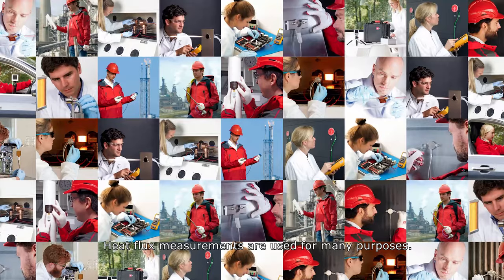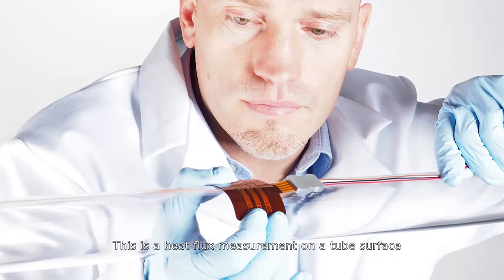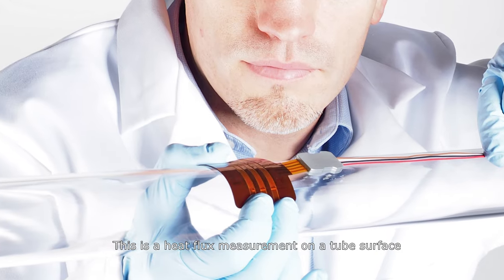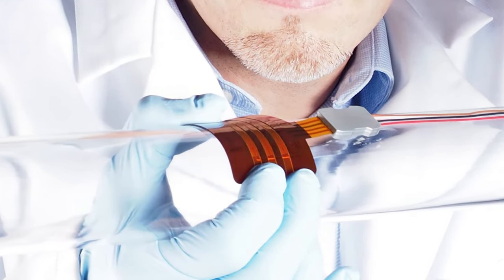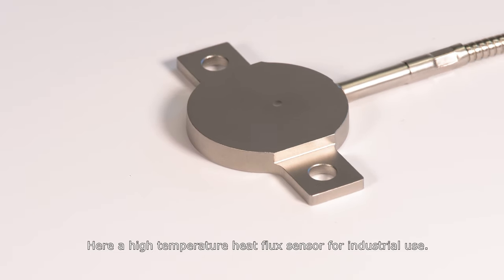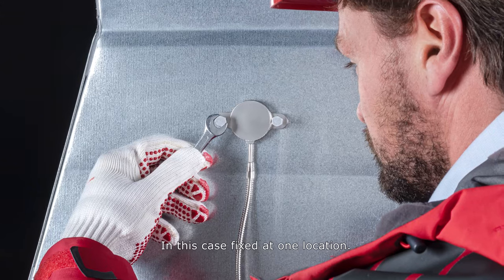Heat flux measurements are used for many purposes. Here are some examples. This is a heat flux measurement on a tube surface with a thin and flexible sensor. Here a high temperature heat flux sensor for industrial use. In this case fixed at one location.